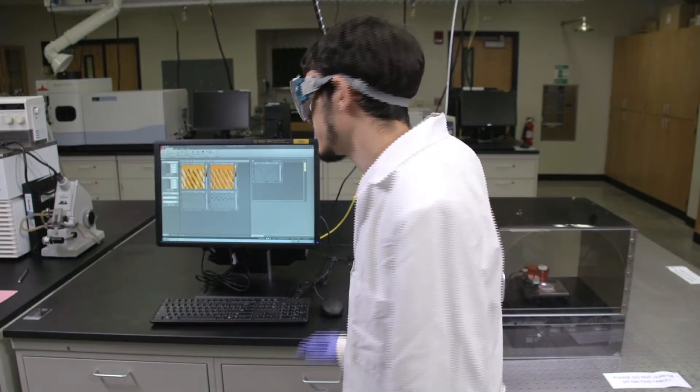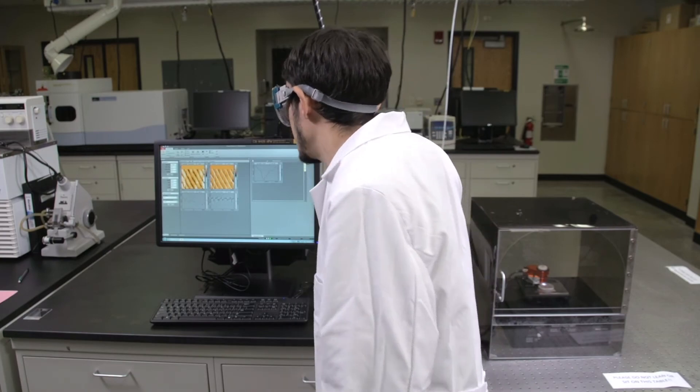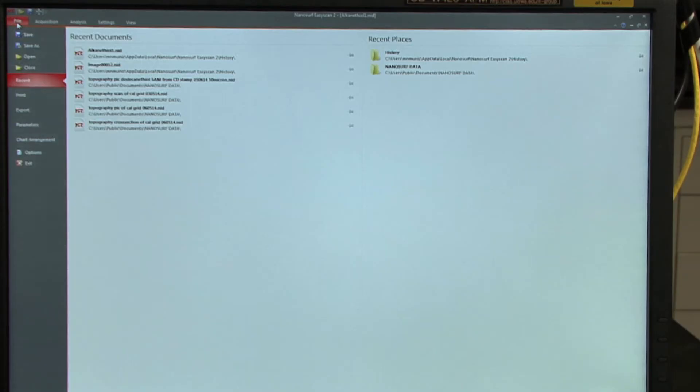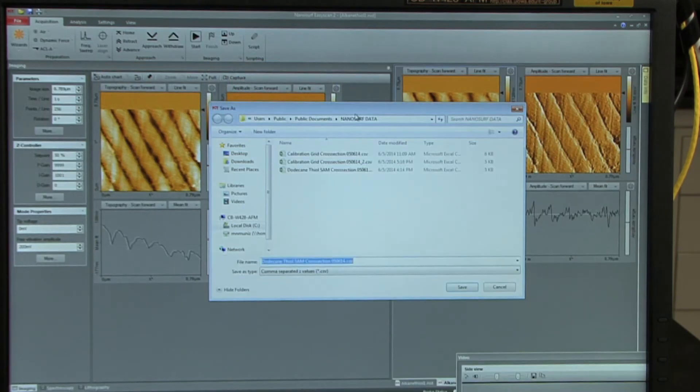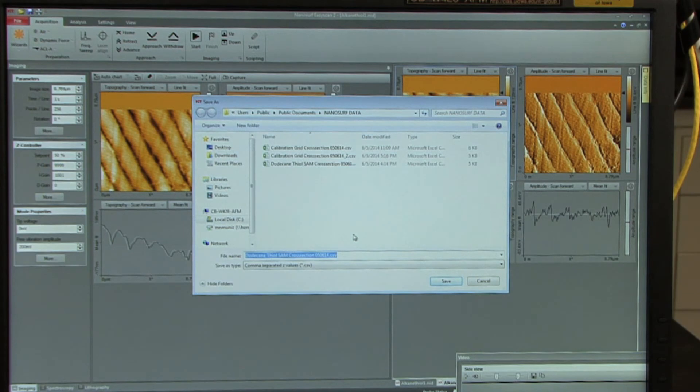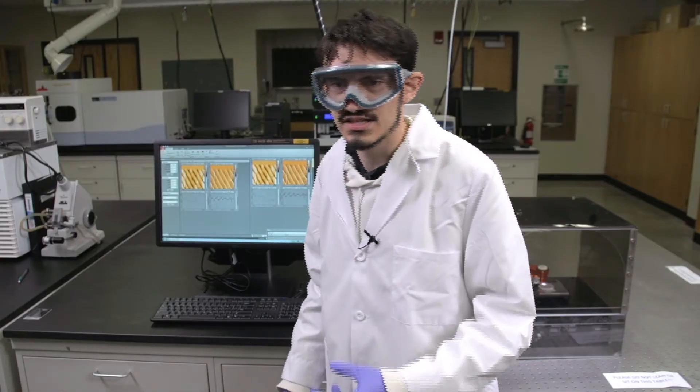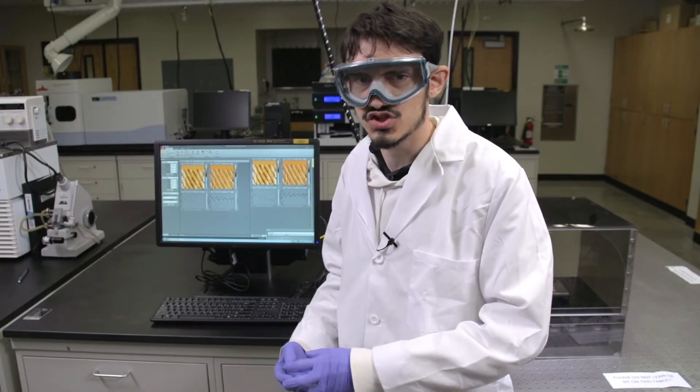Additionally, you can export the raw data as a CSV file by going to file, export, export current chart, and you'll see the comma separated value, Z values come up. Save this in the appropriate public documents area, and then later export it to your individual H drive.